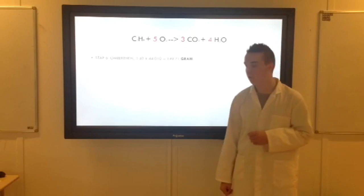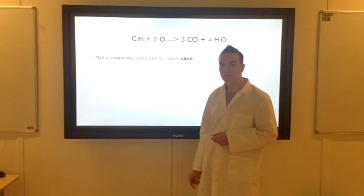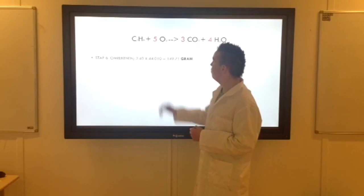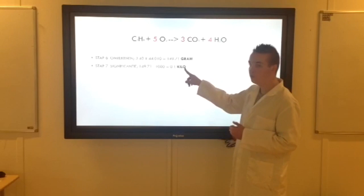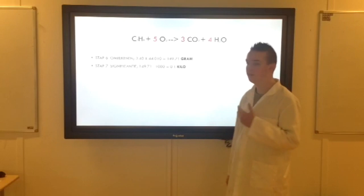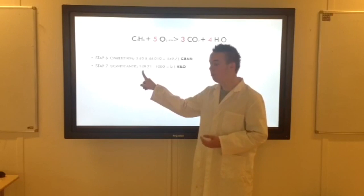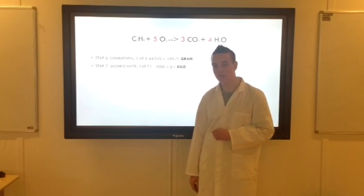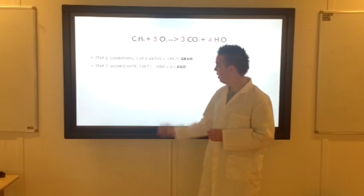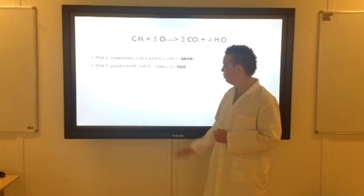Dan bij stap 6. Gaan we hem weer omrekenen. De formule heeft een reek bovenop wordt gezet. We doen 3,40 wat we net hebben uitgerekend. Weer afgerond in de rekenmachine laat je het gewoon staan. We doen een keer 44,010. En er komt uit 149,71 gram. Ik wil hem in kilo's. Zoals ik bij stap 7. Want ik heb in de opgave stond antwoord in kilo's. Dit is wat we hebben. Omdat wij een gram hebben, moeten we hem even delen door duizend. Dan krijg je kilo's. 0,1 kilo. Even één tip. Dit significante 0 telt niet mee. Als het hier een 0 staat, telt hij wel mee. Achter de 1. Maar als hij hier voor de 1 staat, in dit geval, telt hij niet mee. Dus het heeft maar één significant.